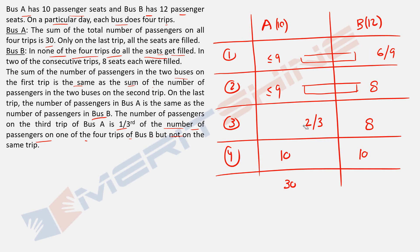If X = 2, Bus A Trip 3 = 2, leaving 18 for Trips 1 and 2. The only possibility is 9, 9. But the equal-sum constraint says Bus A Trip 1 + Bus B Trip 1 = Bus A Trip 2 + Bus B Trip 2. With Bus A trips both at 9 and Bus B Trip 2 = 8, we'd need 9 + 3X = 9 + 8, meaning 3X = 8 — but if X = 2, then 3X = 6, not 8. So X = 2 is also eliminated.